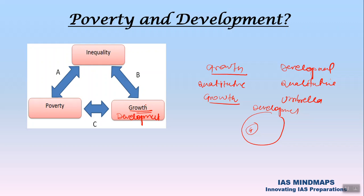If there is inadequate development, that will lead to inequality, and that inequality will lead to poverty. And this poverty again will reinforce and lead to further inadequate development — that is, poverty and development form a vicious cycle.